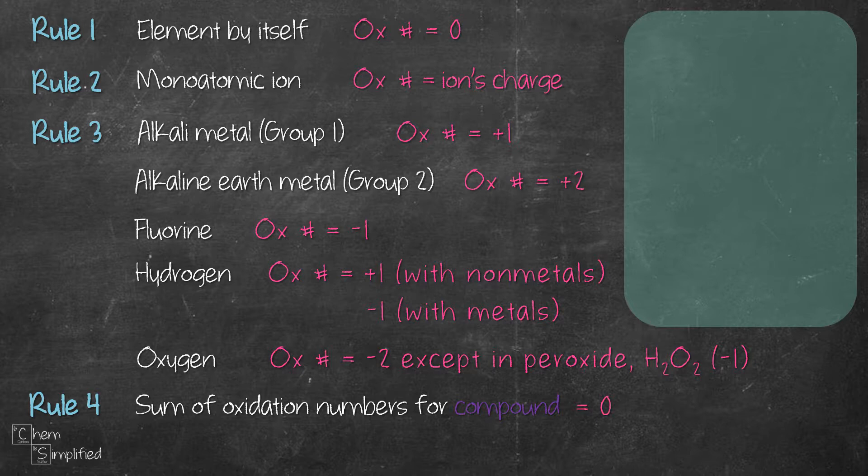Finally, rule number four. The sum of oxidation numbers for a compound is zero. This rule is helpful to figure out the oxidation number of an atom that is not in group one, group two, or fluorine, hydrogen, or oxygen. For example, in MnO2, to find the oxidation of Mn, we add the oxidation number of Mn and O according to the formula and then we make them equal zero.